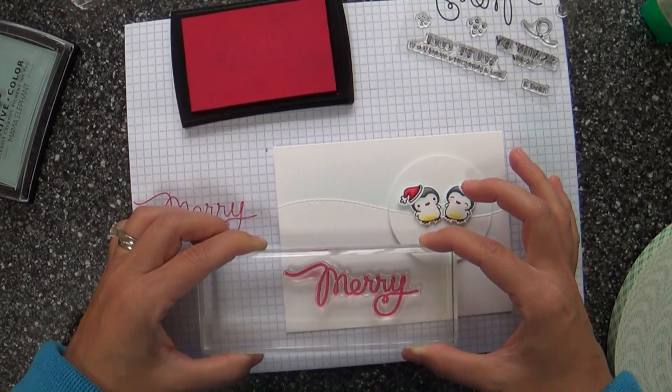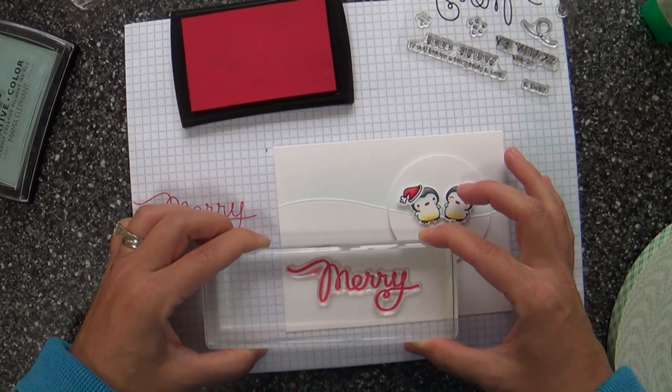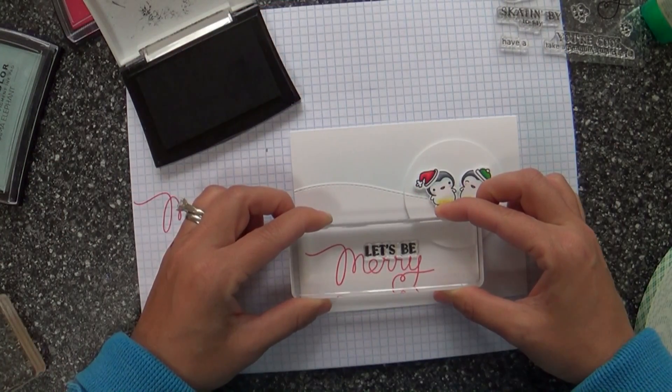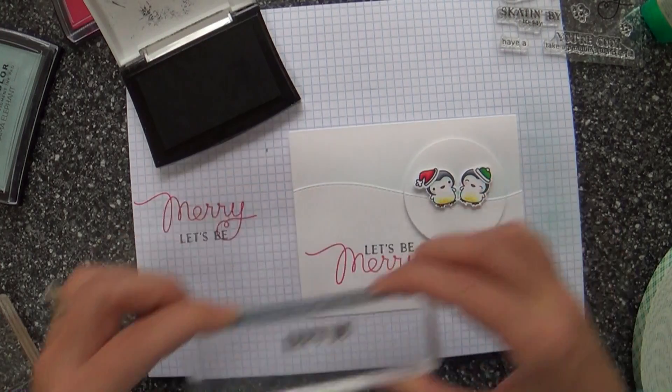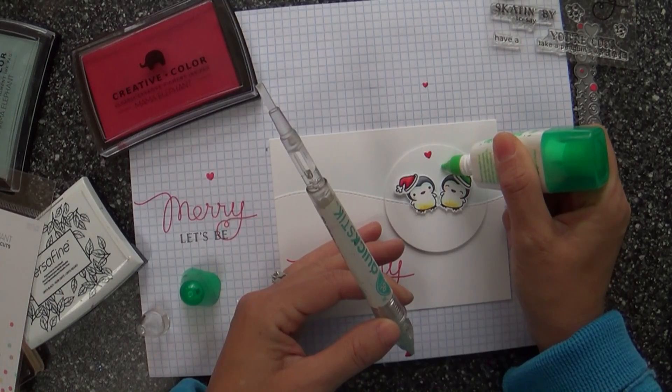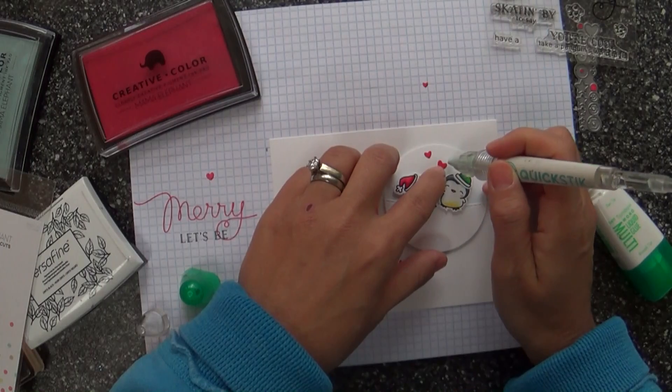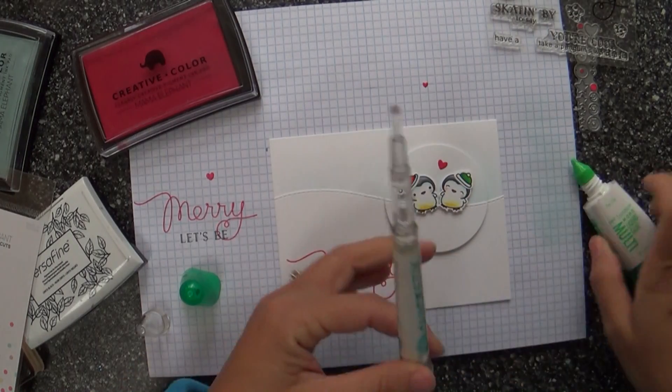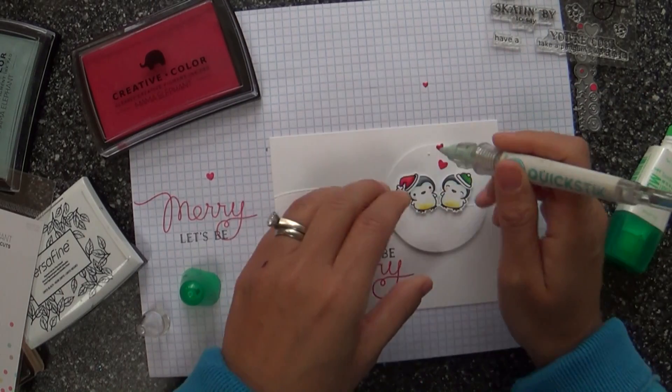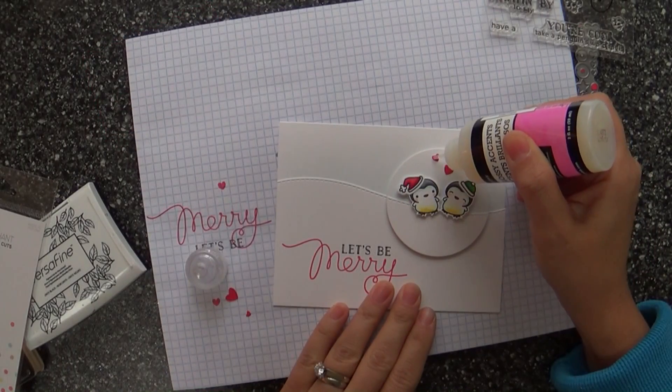Okay, so now we're moving on to stamping our sentiment. I am using the new Jolly and Merry stamp set and this gorgeous font, Merry and Jolly. Just so pretty. And then it coordinates with all these sentiments that go along with it so you can make it say a lot of different things. I'm doing Let's Be Merry. And then I took some of these tiny little heart die cuts. These came from the confetti die by Mama Elephant and it die cuts stars and hearts and little like sequin looking images. And I just took a couple of tiny little hearts and gluing them on just to, you know, show the love that the penguins are feeling.